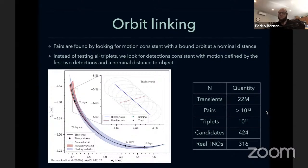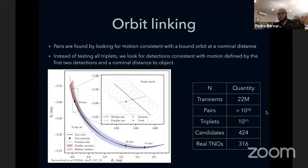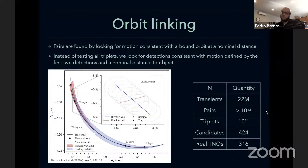Most triplets come from spurious alignments — three random detections that look somewhat consistent with an orbit. So we find more detections in other exposures. The number of spurious alignments decreases strongly as a function of the number of nights of detections, and becomes incredibly rare past six nights. Once we reach that point, we call the orbit a candidate and save it for further confirmation. Our linking produced 424 candidates, of which 316 corresponded to real TNOs.